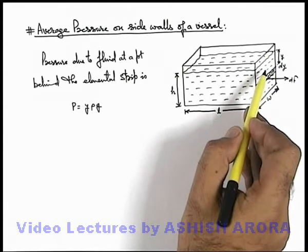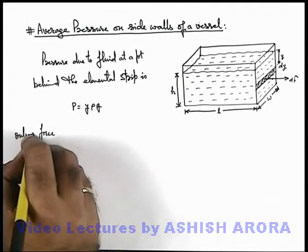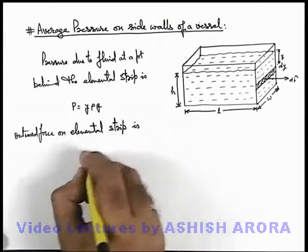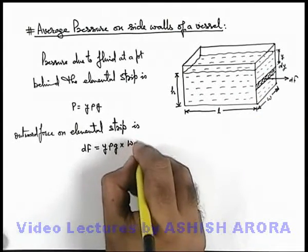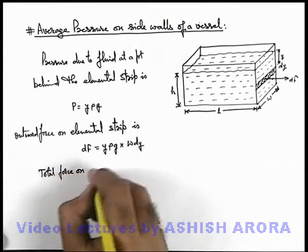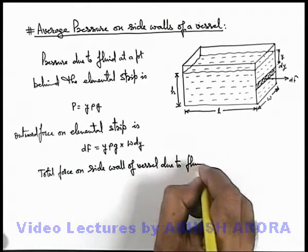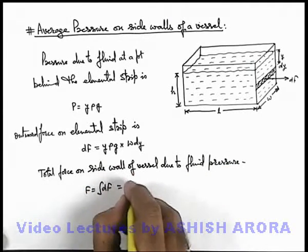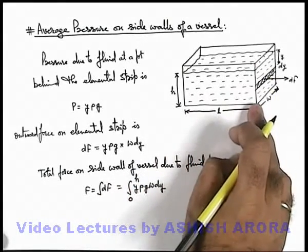The outward force on the elemental strip due to fluid pressure is dF = y·ρ·g multiplied by the area of the strip, which is w·dy. So dF = y·ρ·g·w·dy. The total force on the side wall due to fluid pressure is the integration of dF, which gives us the integral of y·ρ·g·w·dy from 0 to h, since the liquid is filled to height h.